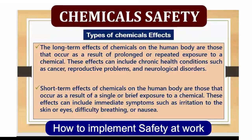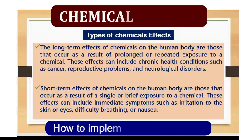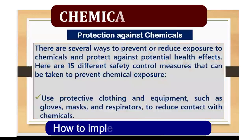The long-term effects of chemicals on the human body are those that occur as a result of prolonged or repeated exposure to a chemical. On the other hand, short-term effects are those that occur as a result of a single or brief exposure to a chemical. These effects can include immediate symptoms such as irritation to the skin or eyes, difficulty breathing, or nausea. These are examples of short-term and long-term effects of chemical exposure.